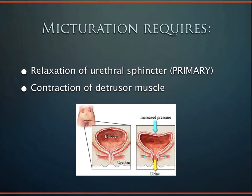Micturition is the fancy term for urinating or voiding. Voiding occurs primarily through urethral relaxation and secondarily through contraction of the detrusor muscle. After a patient voids, there should be little or no urine remaining in the bladder. The amount remaining is called the post-void residual, or PVR.